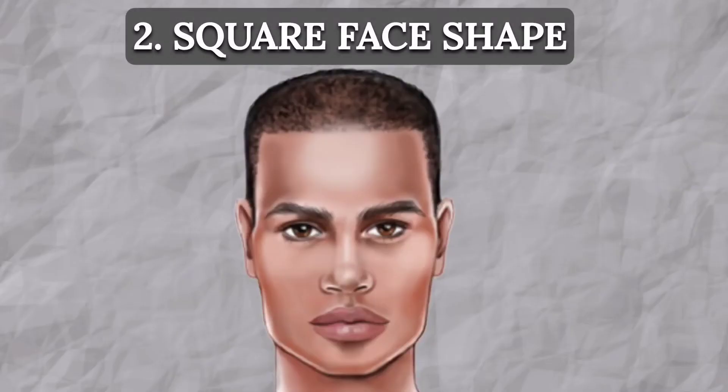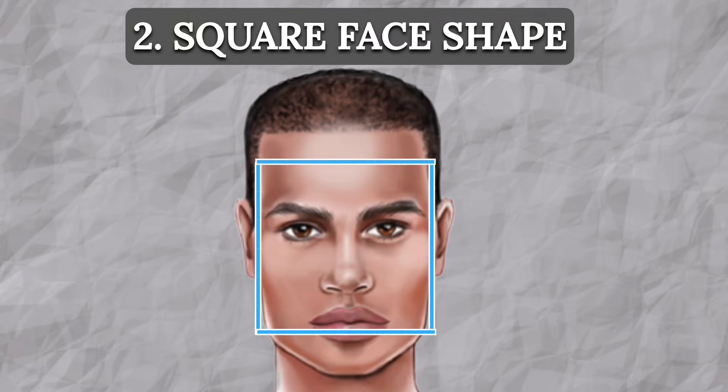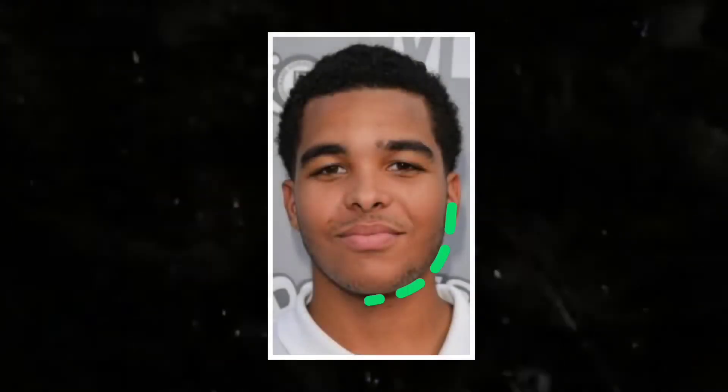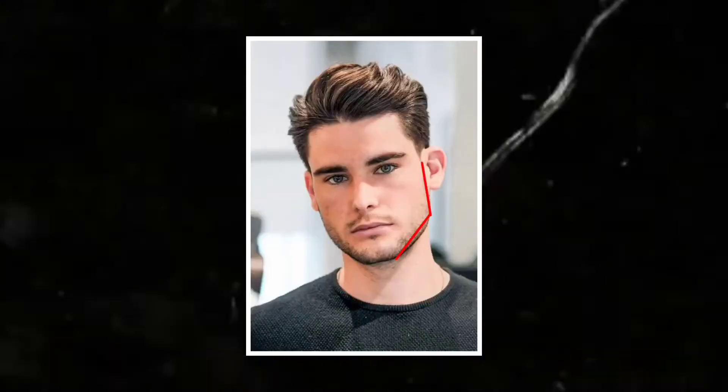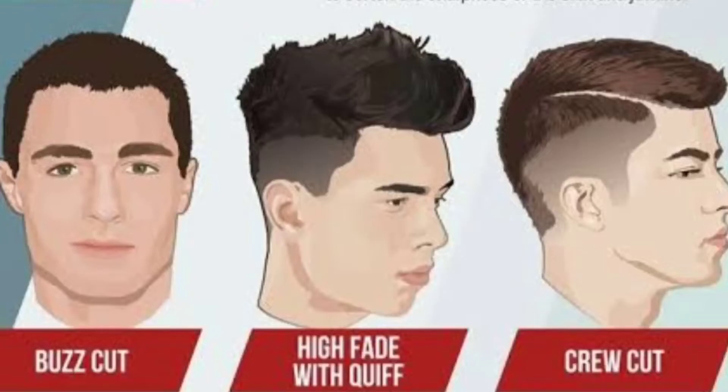Square faces have roughly the same dimensions in height and width, but instead of rounded edges, they tend to have sharp, angular curves. For a square head shape, you should choose haircuts with short, narrow sides. Lots of hair on the side will make your head look wider. Choose a haircut that will lengthen your face and give it a more oval appearance.